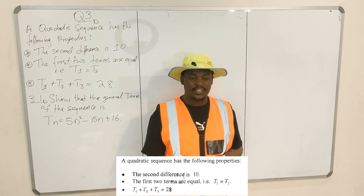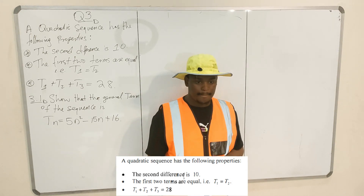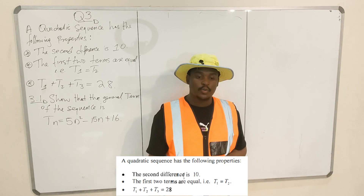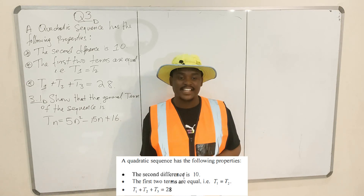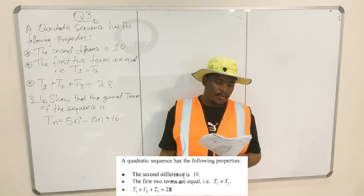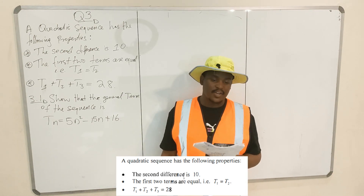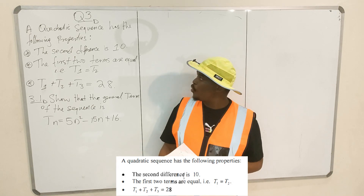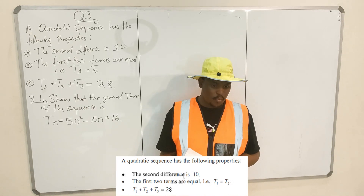What do you know about the second difference of the quadratic sequence? It helps you to get A. The second common difference is constant — it does not change. Also, you are told that the first two terms are equal, meaning term 1 and term 2 of your sequence are equal.